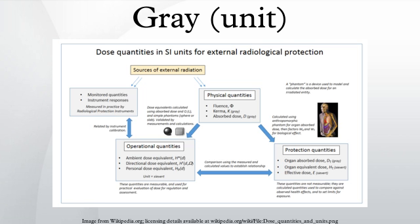Kerma dose is different from absorbed dose depending on the radiation energies involved, partially because ionization energy is not accounted for. Whilst roughly equal at low energies, kerma is much higher than absorbed dose at higher energies, because some energy escapes from the absorbing volume in the form of bremsstrahlung or fast-moving electrons.